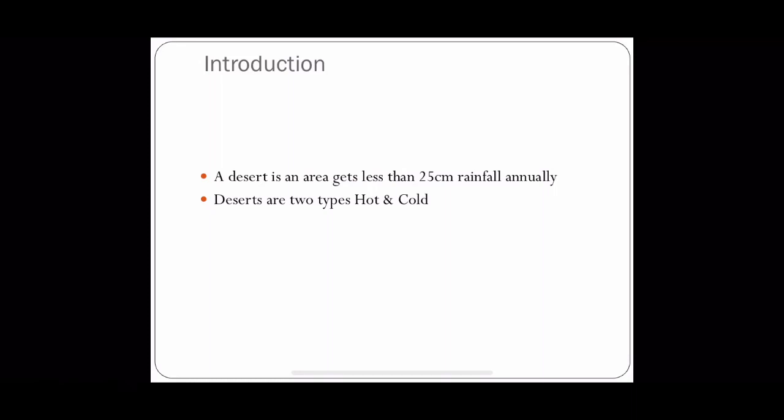What is desert? It is an area that gets less than 25 centimeter rainfall annually, and it is divided into 2 types: hot and cold.